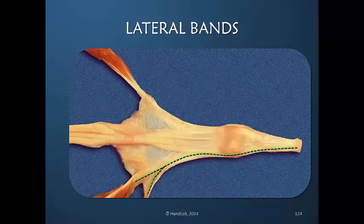On the radial aspect, the shared contribution of the interosseous and the lumbrical is important to note. The lumbrical has a linear insertion and goes more directly into the lateral band than the interosseous, which shares an insertion with other structures.